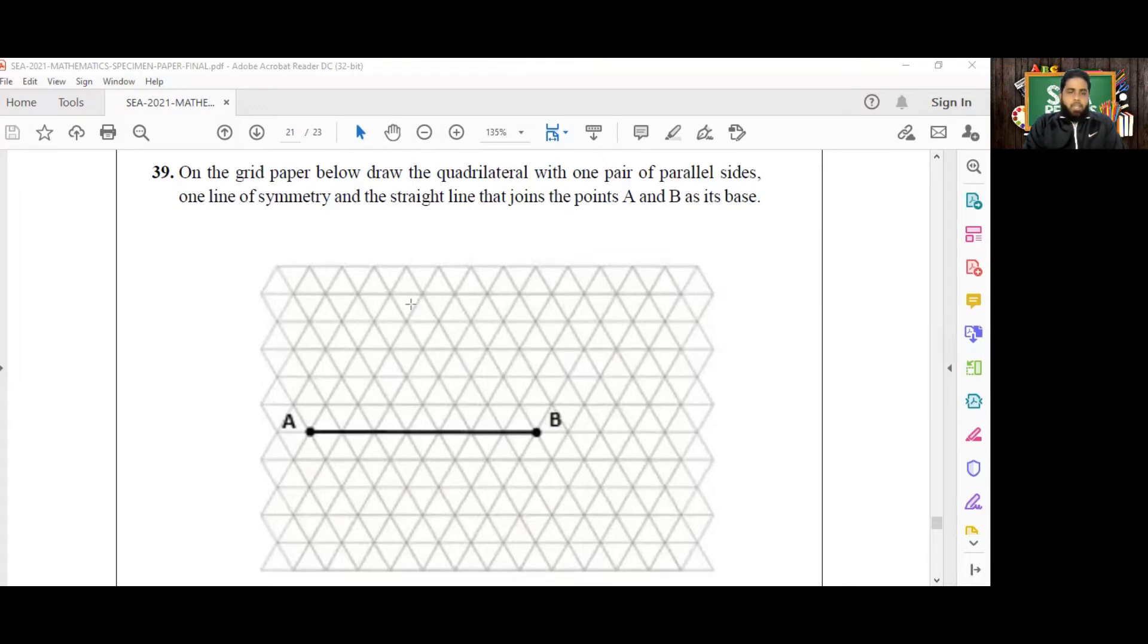The triangular grid that we are using here gives it away somewhat. You can either come right to this point, and what you will end up having is a trapezium. In this case, it will be an isosceles trapezium.